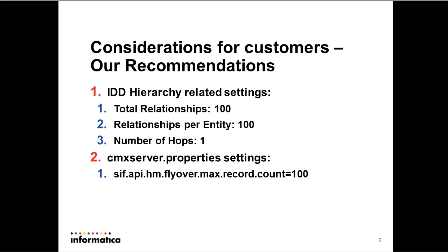What are the recommendations for customers who have thousands of relationships? There are two sets of recommendations. The first set is the configuration within the IDD configuration application, and the second set is in the server-side properties file. The first set of recommendations is to set the total number of relationships to 100, relationships per entity to 100, and number of hops to 1. What this means is we are retrieving at most 100 relationships, and if there is an entity with more than 100 relationships, you'll get a warning message.